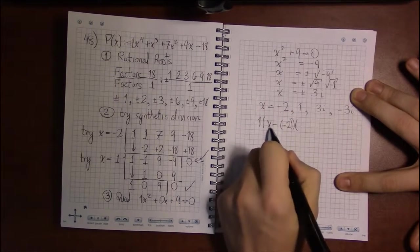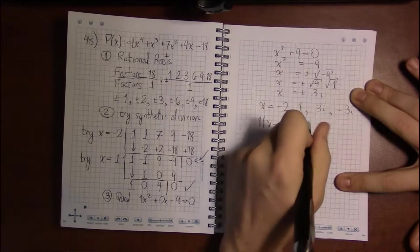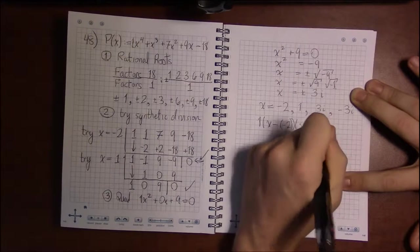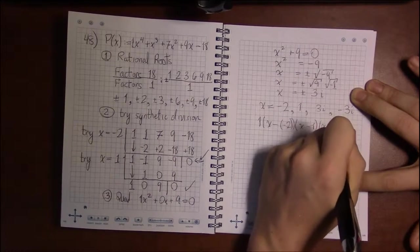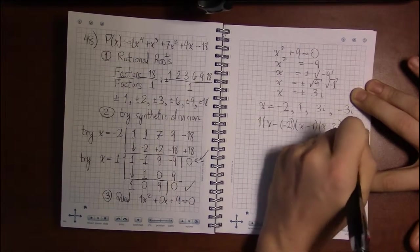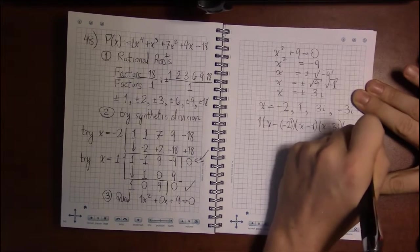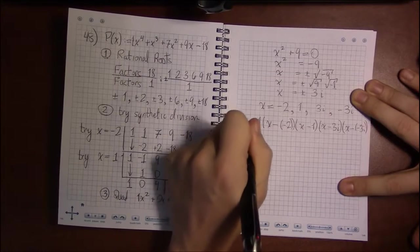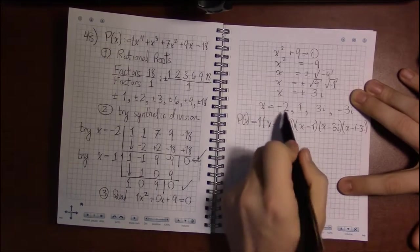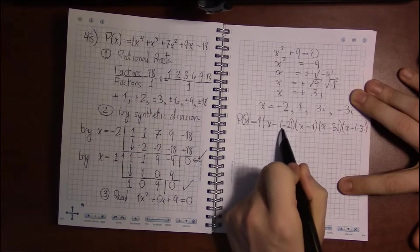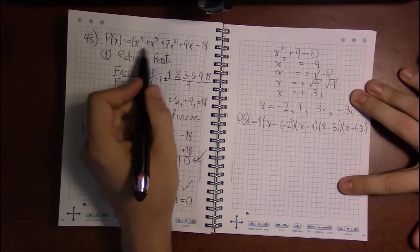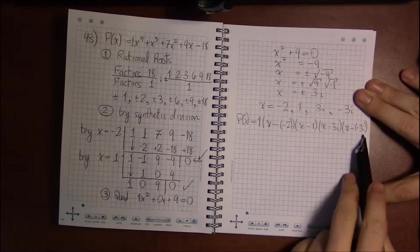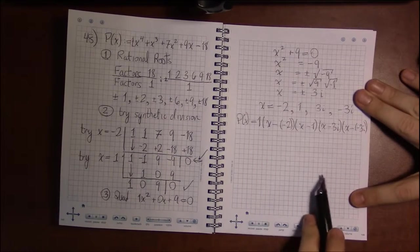And the factors: x minus minus 2, x minus 1, x minus 3i, and x minus minus 3i. So p of x factors like this. Each of the zeros corresponded to a factor of p of x. Finding all the zeros is the same thing as completely factoring p of x.